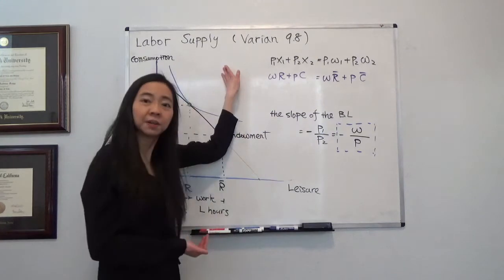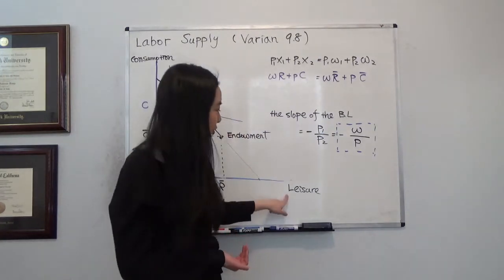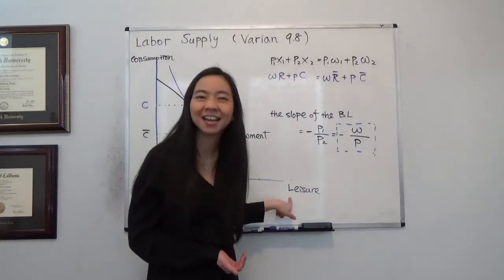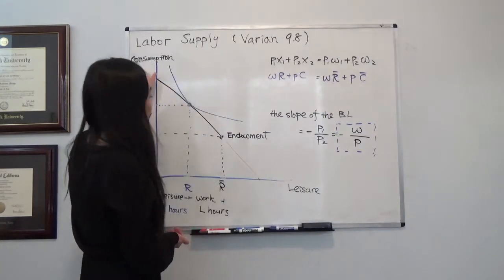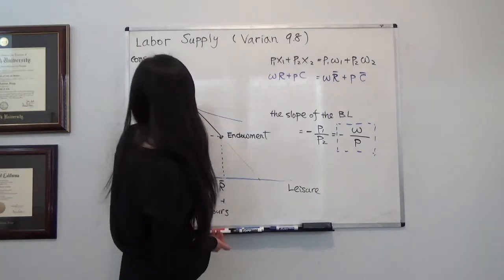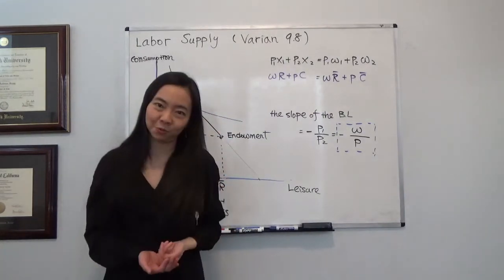Now in labor supply, we are going to treat leisure as our good one, something we like, and we're going to treat the consumption of cheese as good 2, it's also something we like.